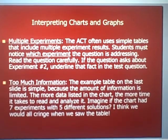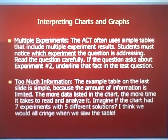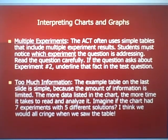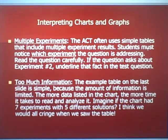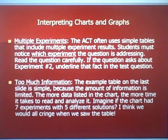Multiple experiments — often the ACT uses simple tables, but they'll give you multiple examples of the same type of table. Students must notice which experiment the question is addressing. Read the question carefully: if it asks about experiment two, underline that in your test booklet so you know to look at experiment two — not experiment one or three. They often use similar-looking charts and hope that you will misread the label.